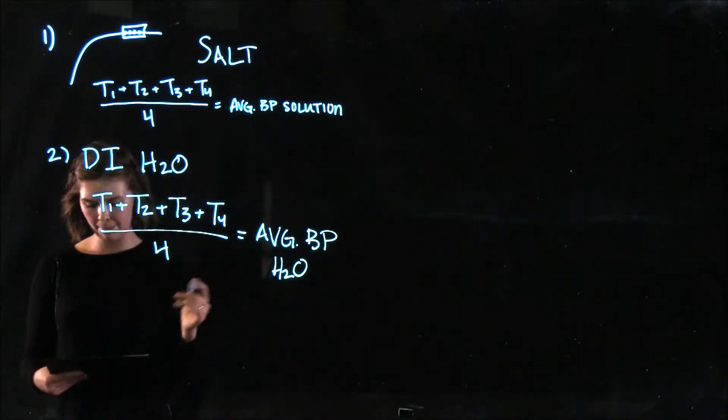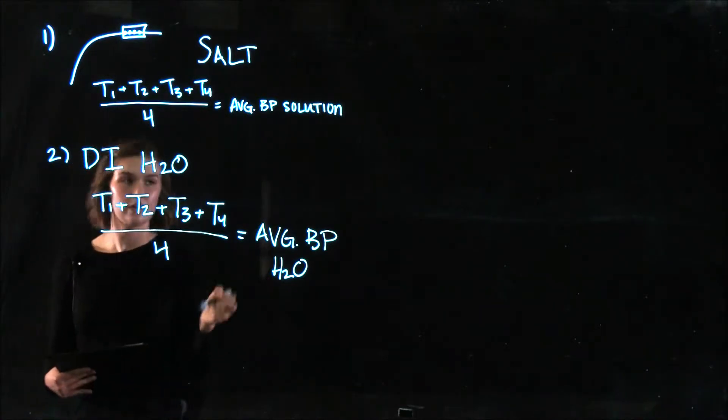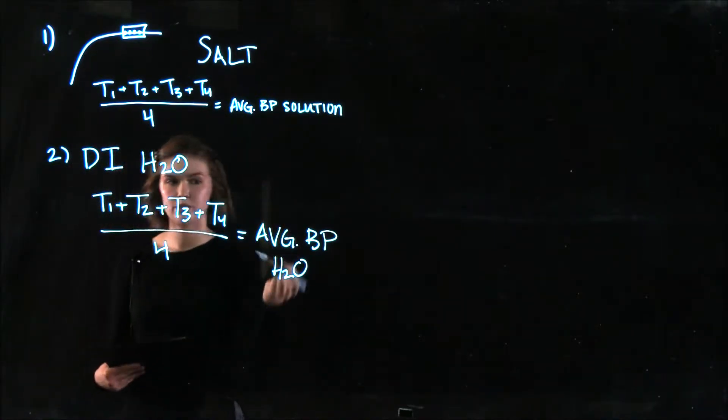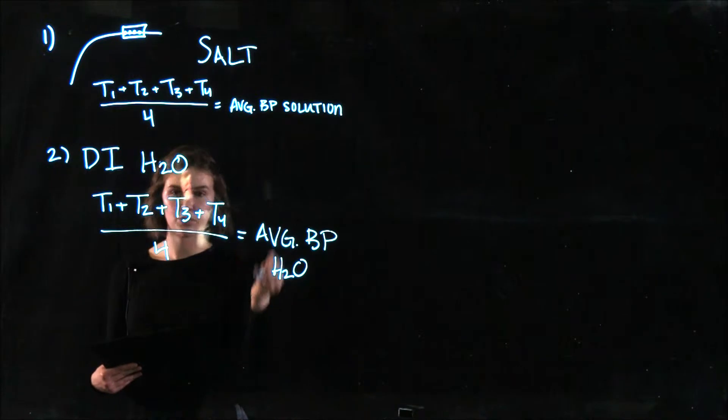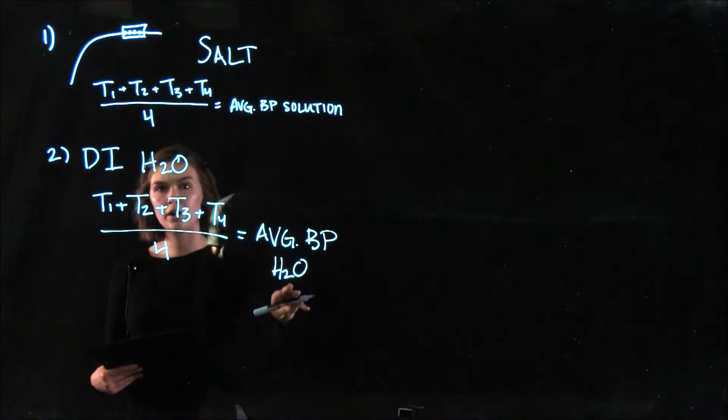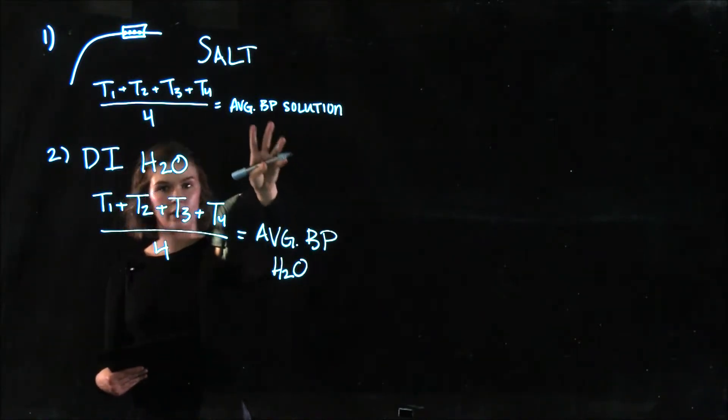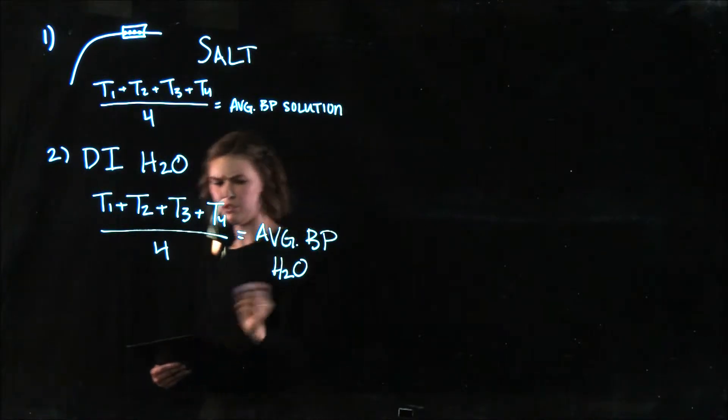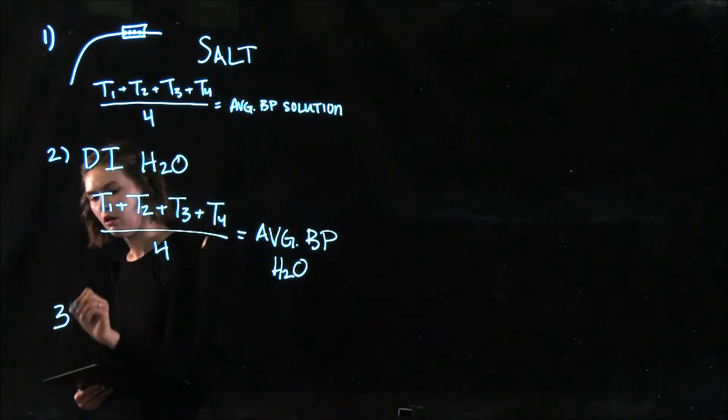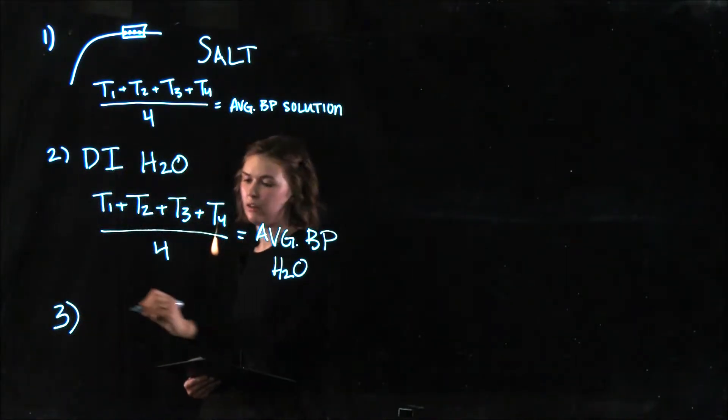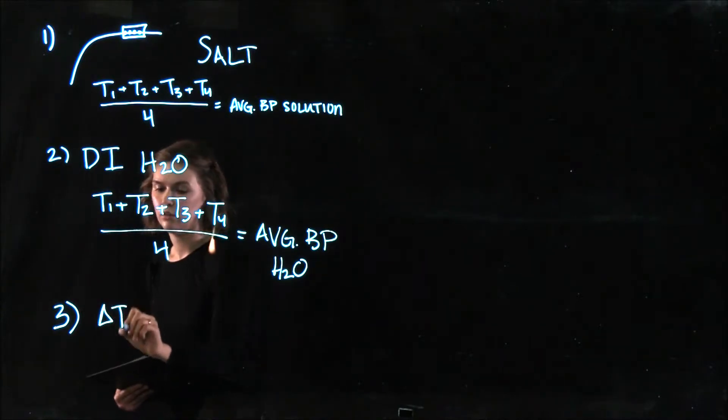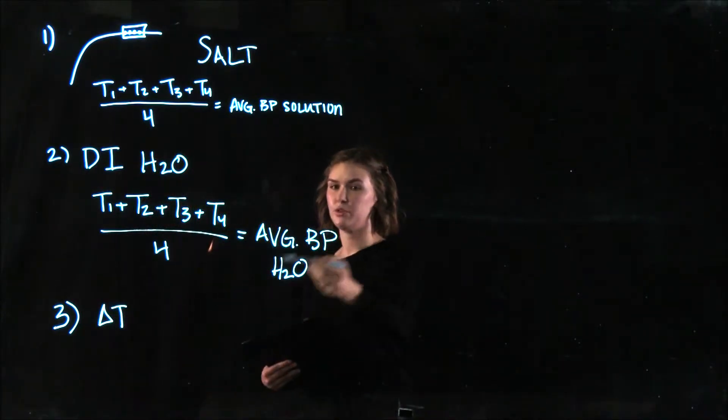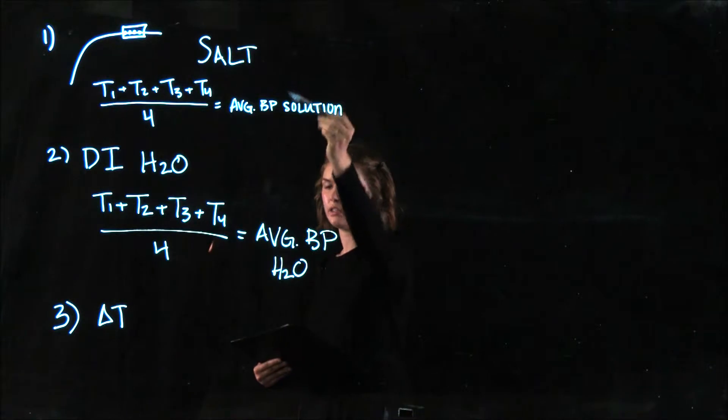So question three is asking what your actual boiling point elevation was. So all that means is the difference between your boiling point of your water and your boiling point of your water and salt solution. So to do that, and we would call that delta T.